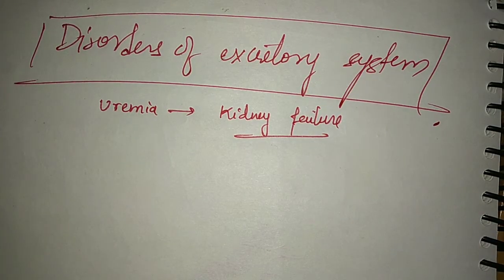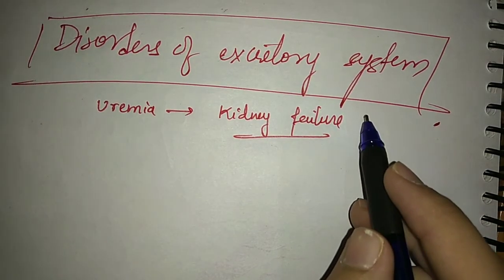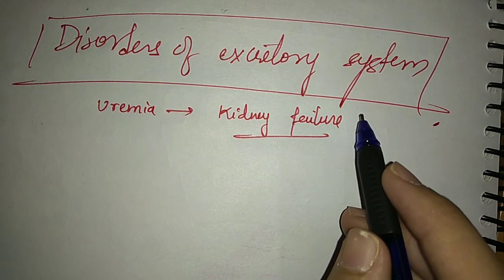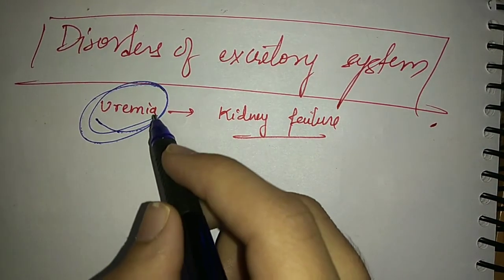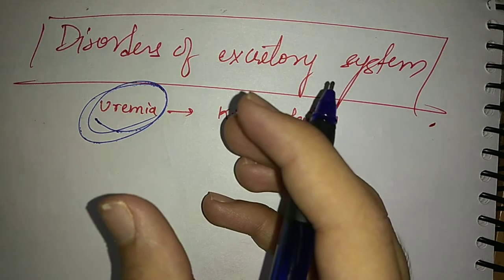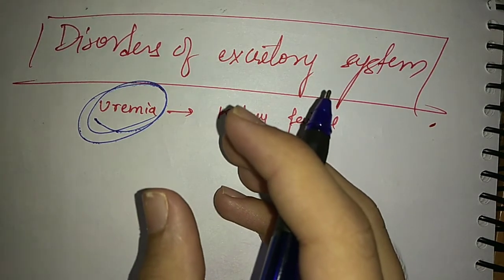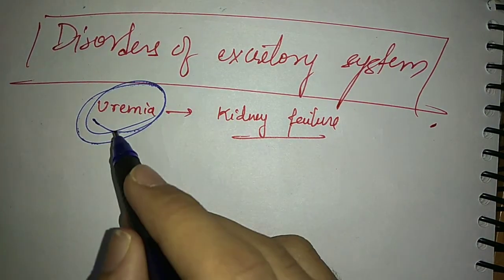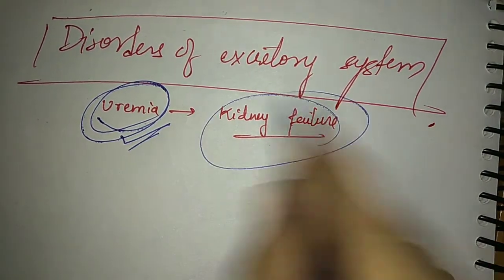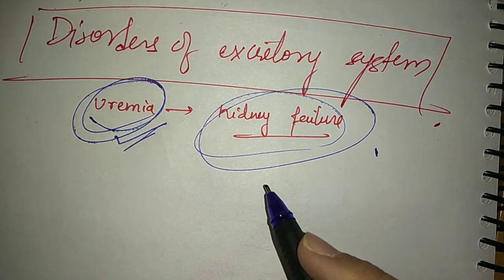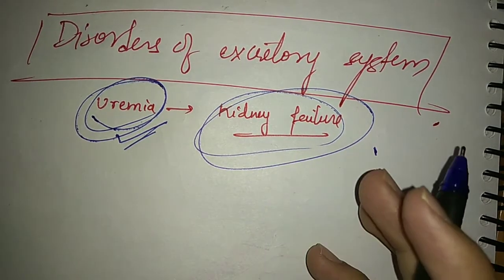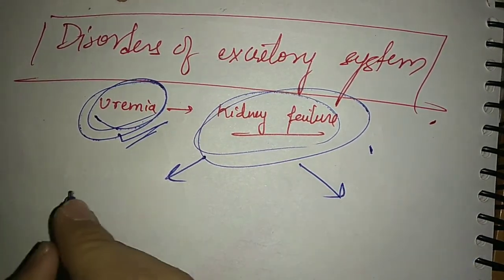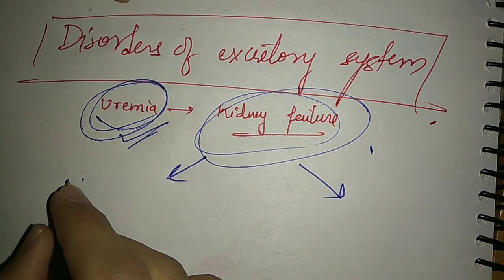Now let us move further and talk about the disorders of excretory system. If the kidney is not functioning properly, malfunctioning of kidney leads to uremia, which is the accumulation of urea in blood. Blood purification is the kidney's job, but if it doesn't work properly, there are two options. First is dialysis or hemodialysis.